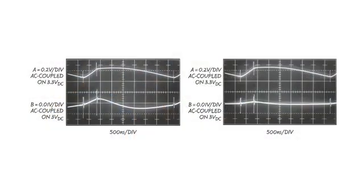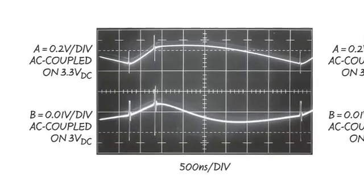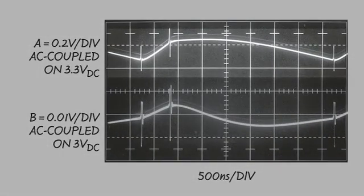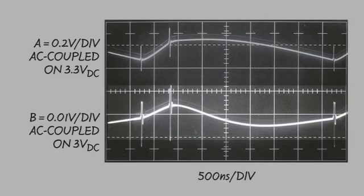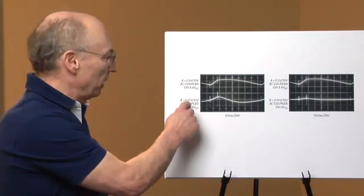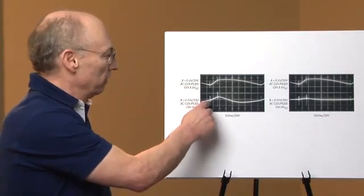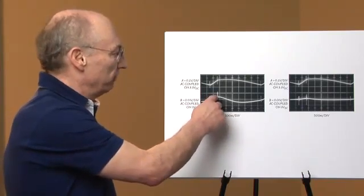This is a typical display that you'll see on an oscilloscope. This is the input ripple. This is the output so-called regulated ripple. You can see that the ripple content is down, but the spikes are very much in evidence.